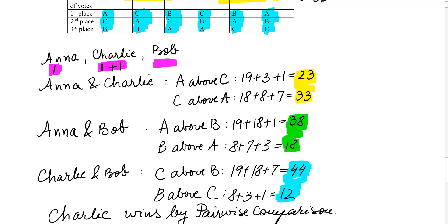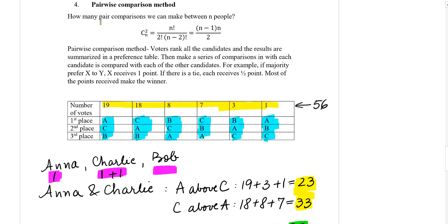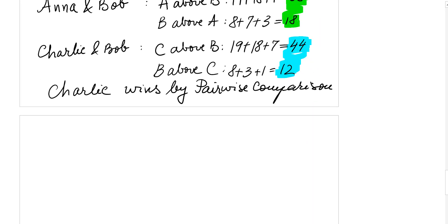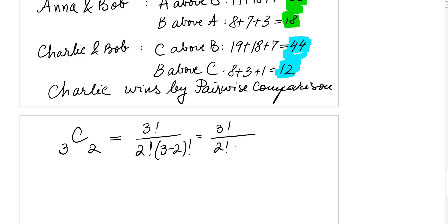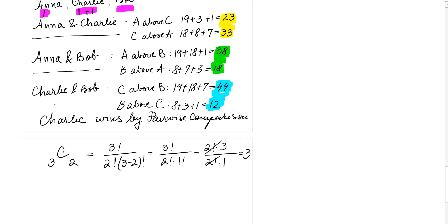Now, if we are wondering whether we made all possible pairs, here is the formula to figure out how many pairwise comparisons we should make. In our case it is the combination of 3 candidates taken 2 at a time, which equals 3 factorial over (2 factorial times 1 factorial). Simplifying: the 2 factorials cancel and we get 3. So we should have 3 pairs — and indeed we had Anna and Charlie, Anna and Bob, and Charlie and Bob. I hope this helps.